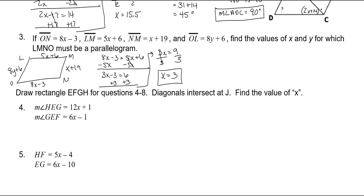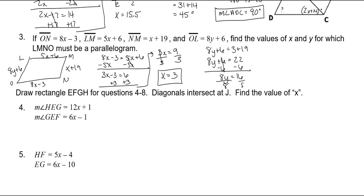Now for the other sides, set them equal: 8Y plus 6 is equal to X plus 19. We know X is 3, so replace that: 8Y plus 6 is equal to 22. Subtract 6 on both sides: 8Y is equal to 16. Divide by 8, and Y is 2.